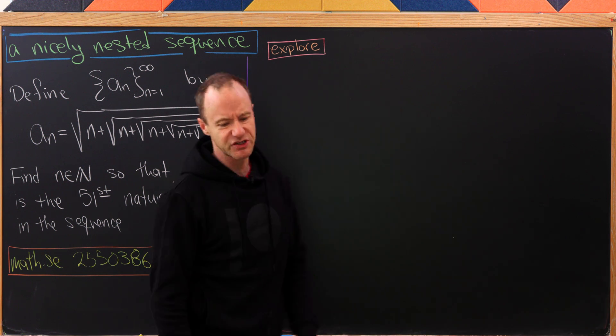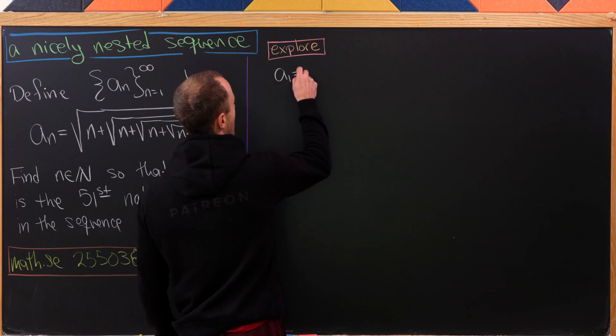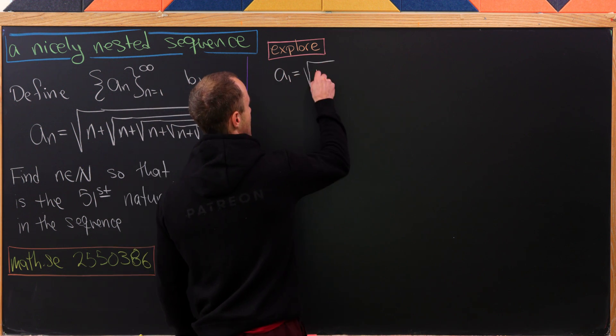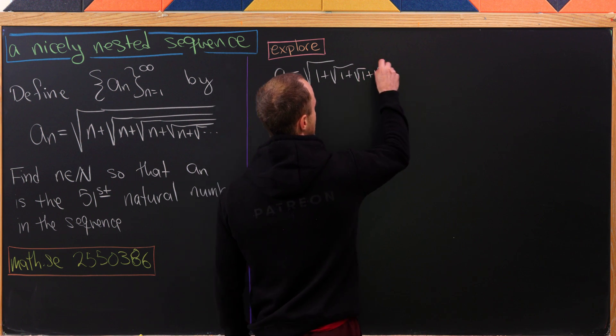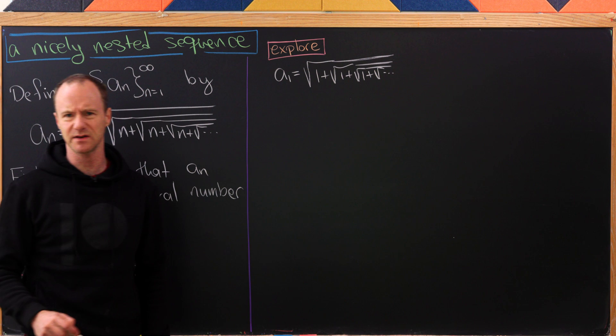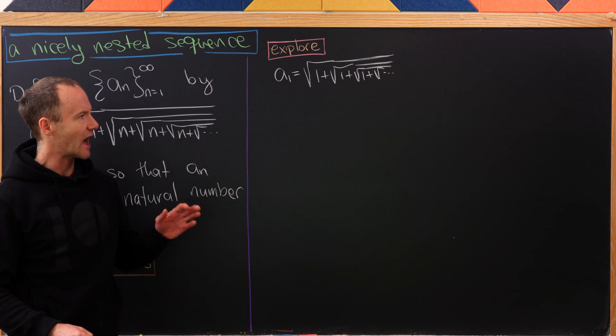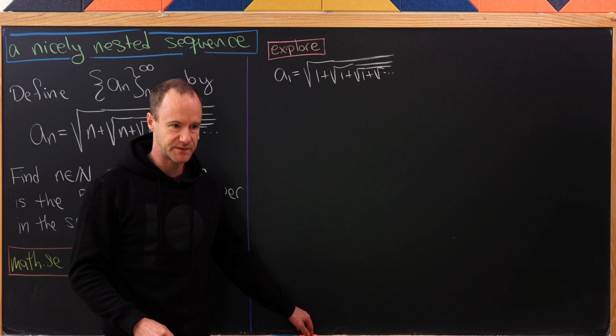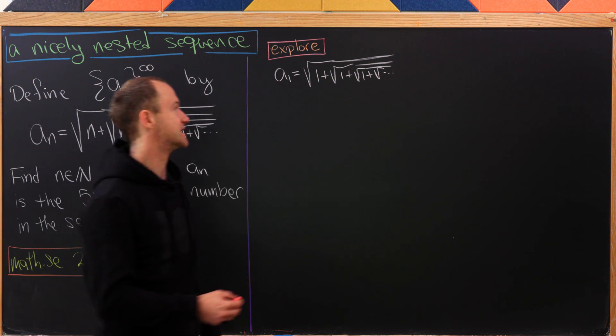Let's start with a bit of exploration. Let's look at a_1. That's the square root of 1 plus the square root of 1 plus the square root of 1 and so on. This is a pretty popular problem on the internet. Since we've got this similarity within nesting, we can use that.